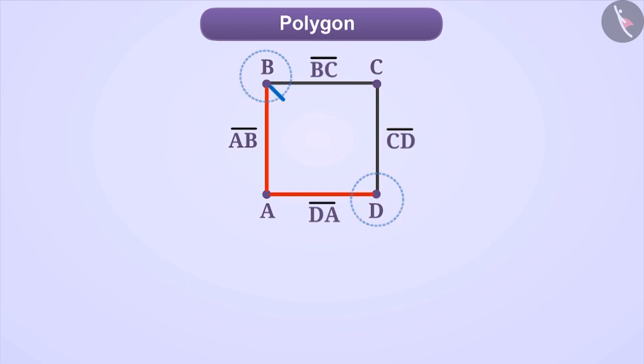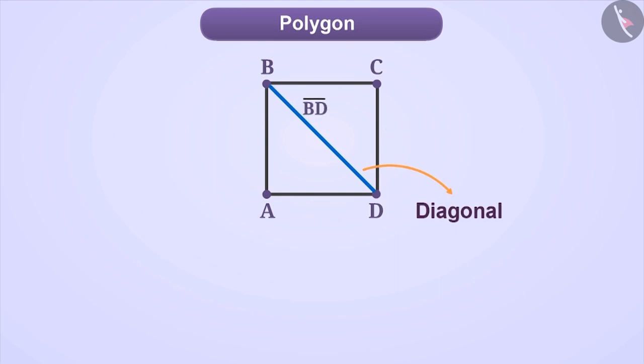If we connect such vertices which are not adjacent, then the line segment so formed is called diagonal of the polygon. Like here, line segment BD is the diagonal of the polygon. Similarly, if we connect A and C, then we get the diagonal AC. In this way, you must have understood a lot about the concepts of polygons.